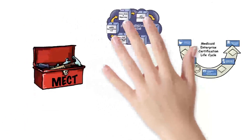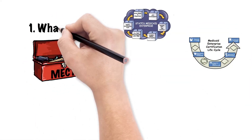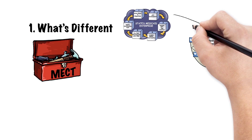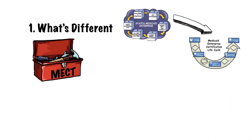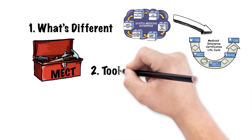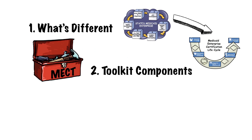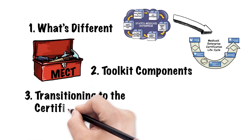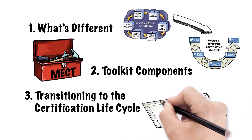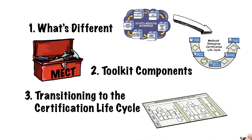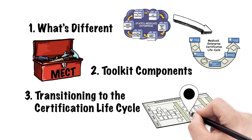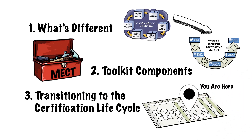We've broken this training video into three parts. In the first section, we will explain how the latest toolkit differs from the 2007 toolkit. In the second section, we'll tour the toolkit components. In section 3, we explain the new certification life cycle and how a state can transition to it, even if it has already begun its MMIS development. We'll also examine how to select the most appropriate checklist set, given a state's modular architecture.